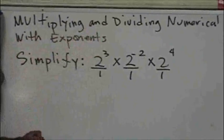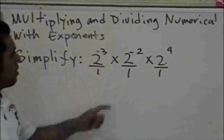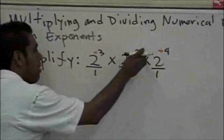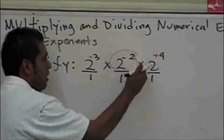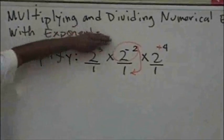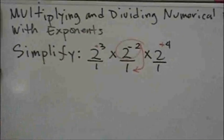This has a positive three, it stays in the numerator, a positive four stays on the numerator, while the one that has the negative needs to be moved to the denominator. Any power that has a negative moves to its opposite location.